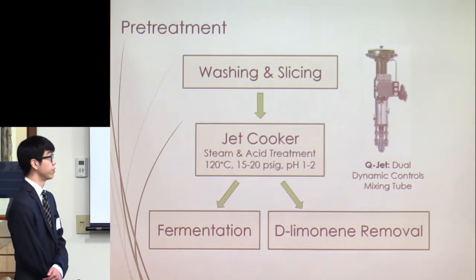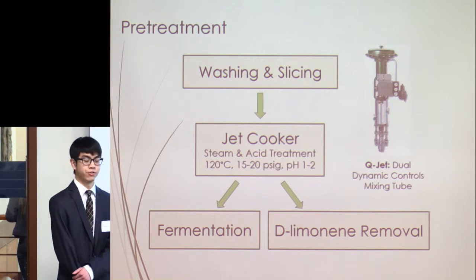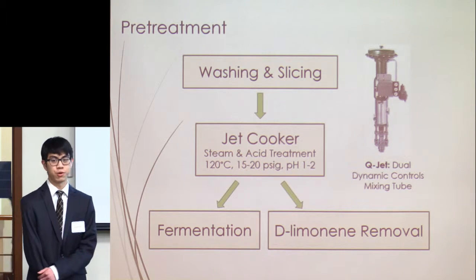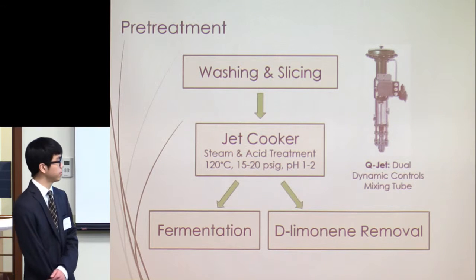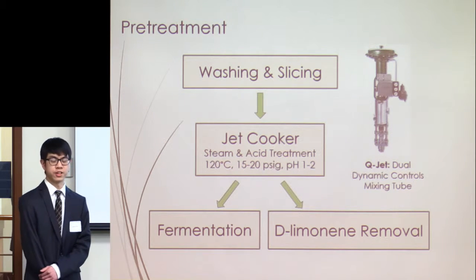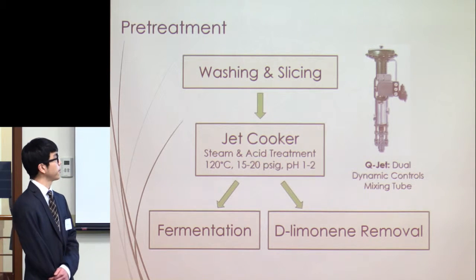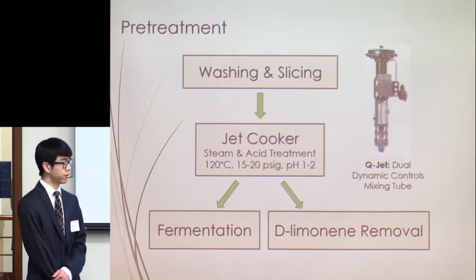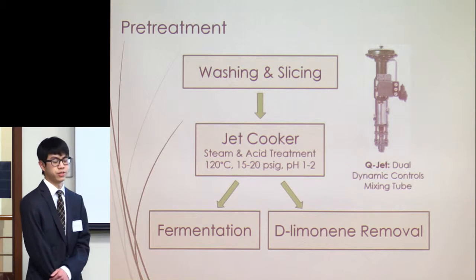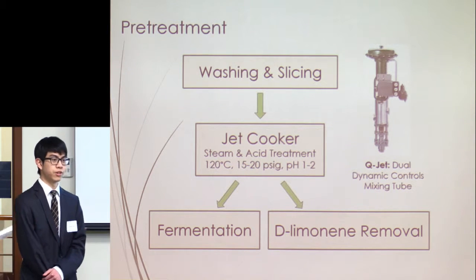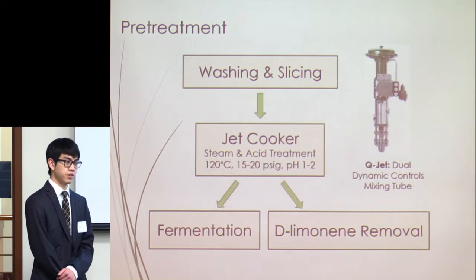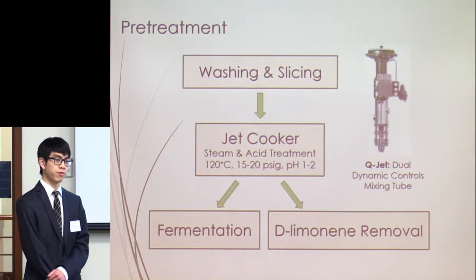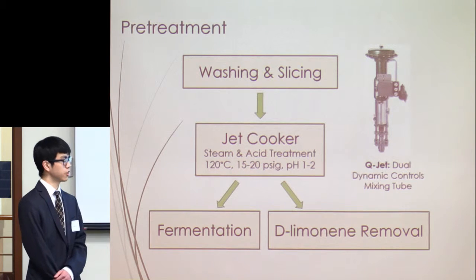The first step is pre-treatment. Since there aren't established regulations around orange peels, the first step is to wash them and get rid of any major impurities, as well as slice them to standardize them in a way that won't affect downstream processing. After that, they head to a jet cooker with steam to elevate the temperature and pressure up to about 120°C and 15 to 20 PSIG. This essentially explodes the peels, breaking down their physical structure. We also treat with sulfuric acid, bringing the pH down to about 1 or 2, providing chemical means of degrading the overall structure.